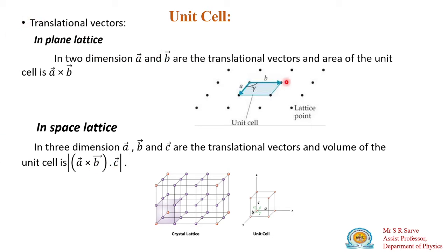For a plane lattice, the area occupied by a unit cell is given by a vector cross b vector. In summary: a plane lattice requires two translational vectors (a and b), while a space lattice requires three (a, b, and c). The area in a plane lattice is a × b, and the volume in a space lattice is (a × b) · c.